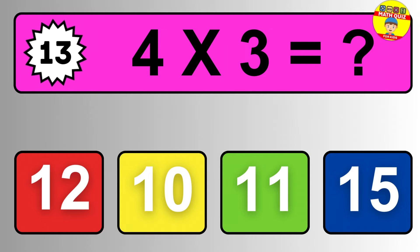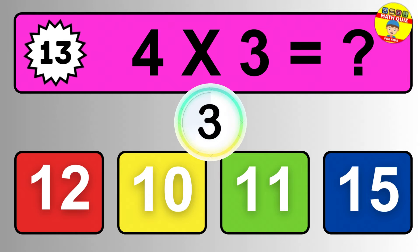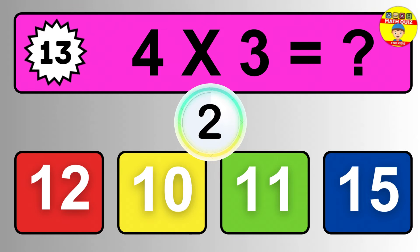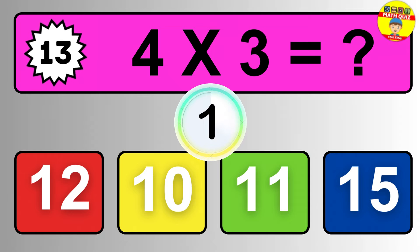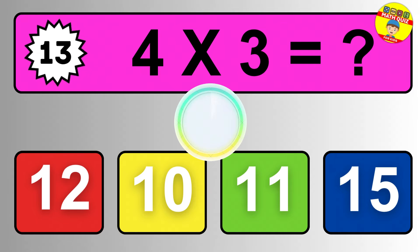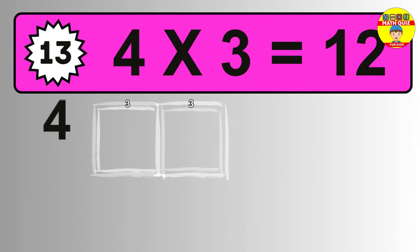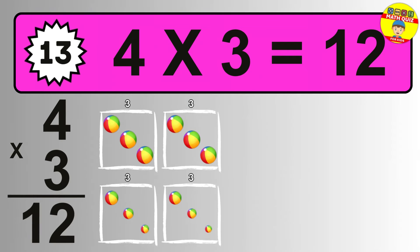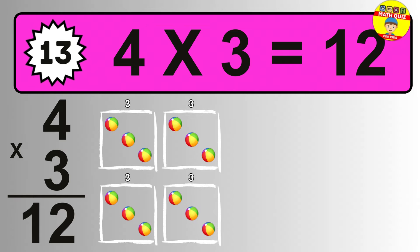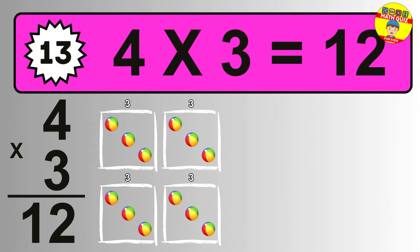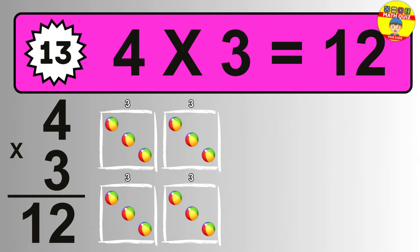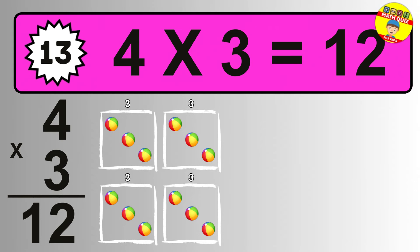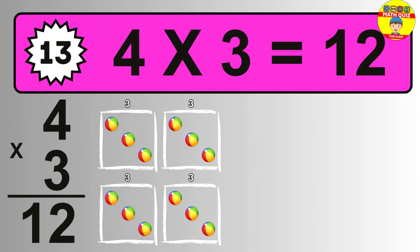Question thirteen. Four times three equals what? The answer is four times three is twelve. To calculate, we have four groups with three balls each one. So how many balls do we have? Twelve balls.